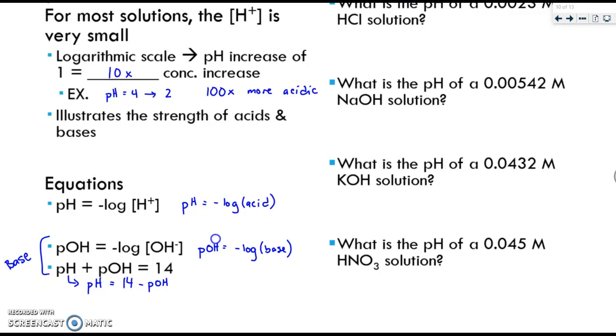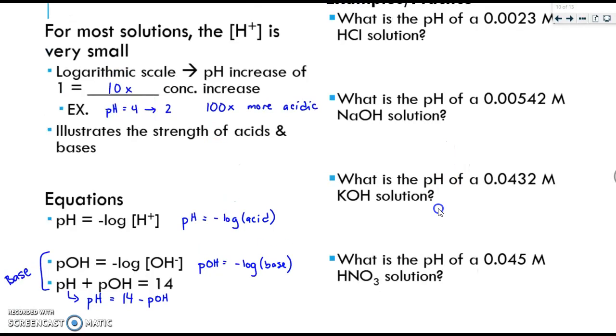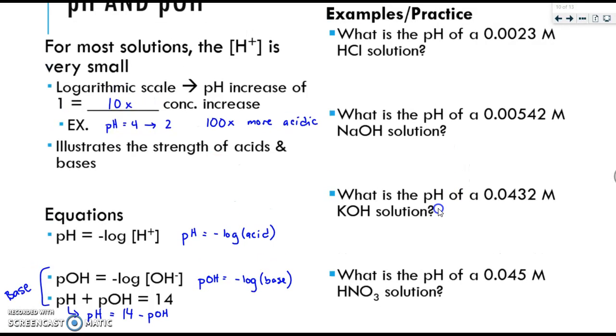We're going to practice using these equations in these example practice problems. So the first thing you need to do when you solve one of these problems is determine if something is acidic or basic. Well, this starts with an H, so we know that it's an acid. So because it's an acid, all I have to do is take the pH equals the negative log of the provided number. When you solve that, you get 2.64. pH does not have a unit, and we're always rounding our pHs to two decimal places because the logarithmic sig fig rule is different than the norm.